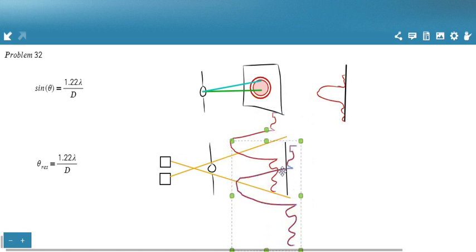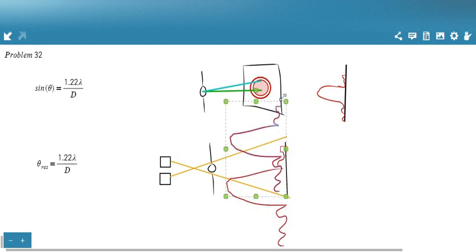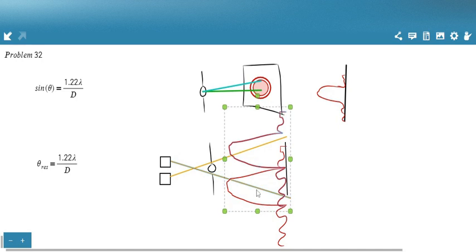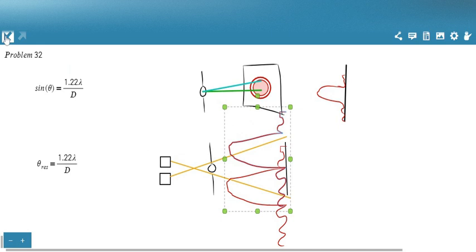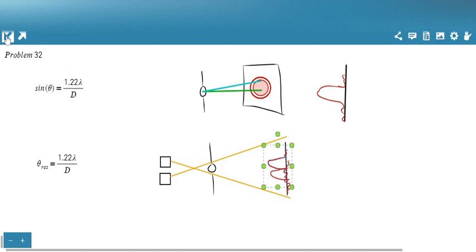So they would have to be this big for these two intensities to interfere, and we wouldn't be able to resolve it. So we want a theta res that's smaller. The smaller the theta res, the more you'll be able to distinguish two objects that are angularly close together. So that is what is meant by that resolution limit given by this Rayleigh criterion equation.